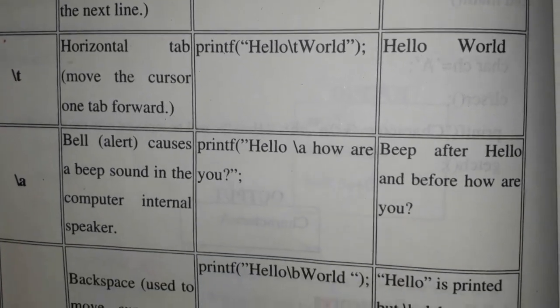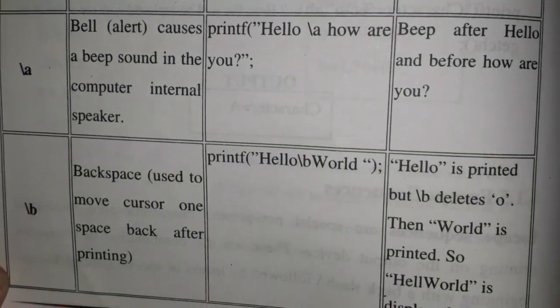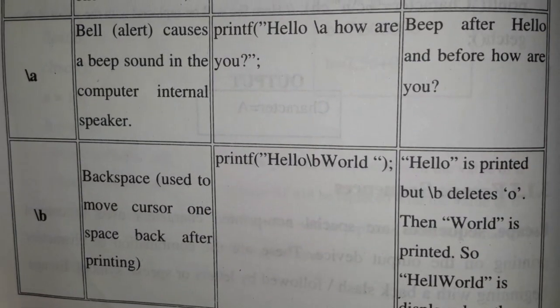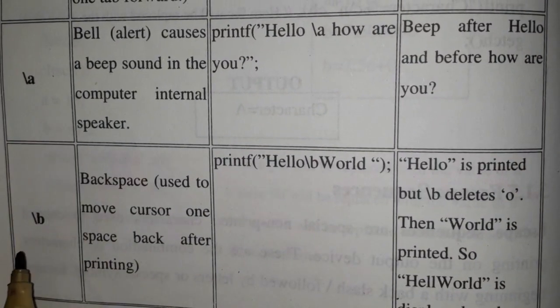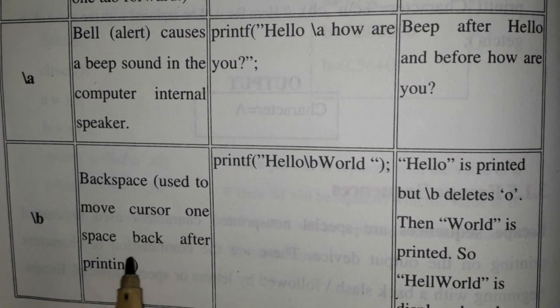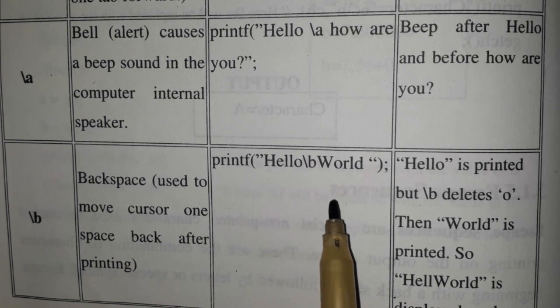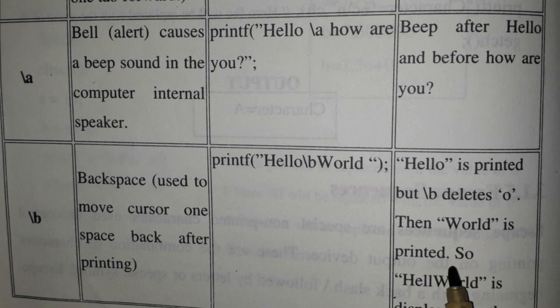Backslash b has the same function as backspace which is on the keyboard. It deletes one character which is before backslash b. Backslash b deletes the o, so hell world is displayed on the screen.